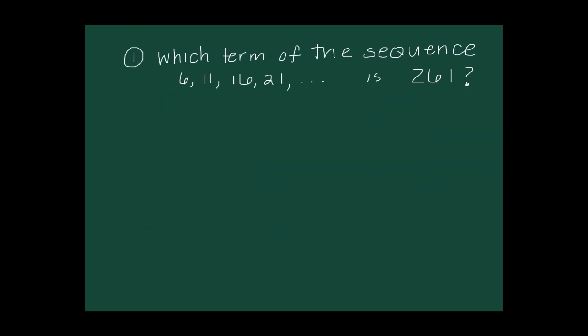Here's a typical test question: which term of the sequence 6, 11, 16, 21, ... is 261? The problem doesn't tell us if it's arithmetic or geometric, so we determine that first. Checking: 11 minus 6 equals 5, and the common difference is consistently 5, so it's arithmetic. Since the problem doesn't say 'sum,' I'll use the nth term formula.